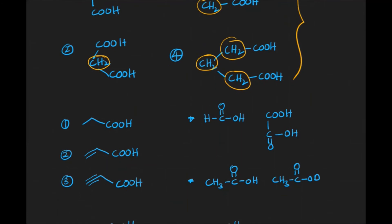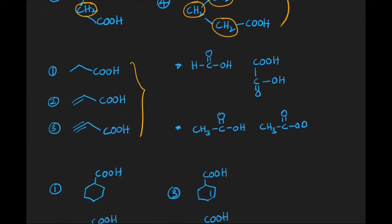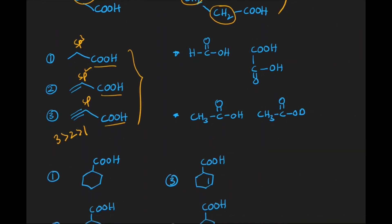For carboxylic acids attached to sp3, sp2, and sp hybridized carbons: as s-character increases, the electronegativity of the carbon increases, strengthening the -I (minus inductive) effect. This stabilizes the conjugate base more, increasing acidity. So the acidic order is: sp-attached > sp2-attached > sp3-attached.